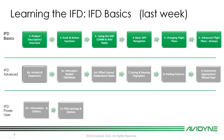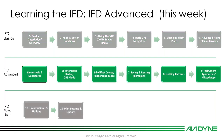Last week we covered product overview, knob and button functions of the IFD, VHF comm and nav radios, basic GPS navigation, changing flight plans, and adding airways into flight plans. This week we're covering arrivals and departures, intercepting a radial in OBS mode, offset courses, rubber banding, saving and reusing flight plans, holds, and instrument approaches with missed approach procedures.